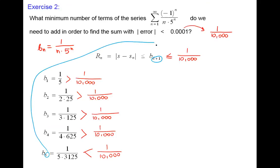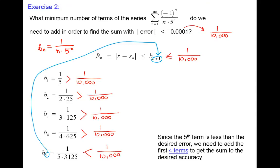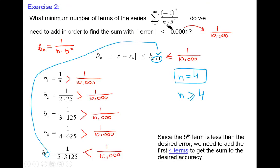B sub five represents n plus one, so the conclusion is: since the fifth term is less than the desired error, we need to add the first four terms. Adding more terms only minimizes the error further. Any number of terms equal to four or greater will keep the error less than one over 10,000. But the minimum number is four — that is the correct answer.